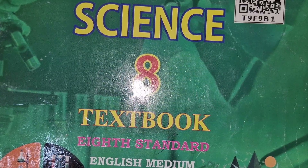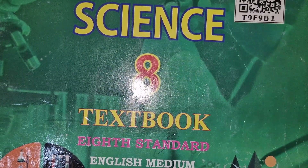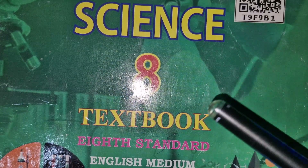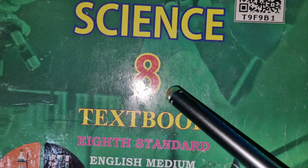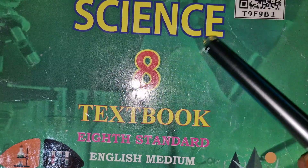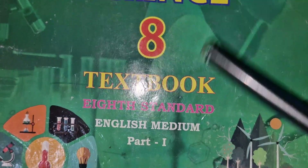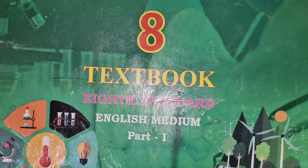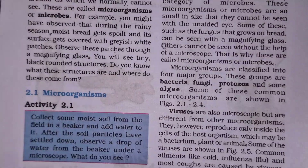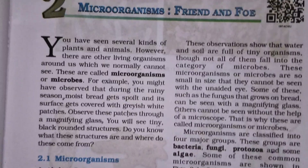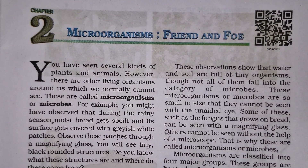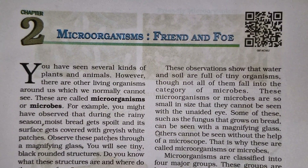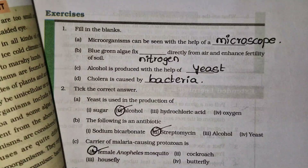Hello friends, once again welcome back to my channel. Today we are going to solve the question answers from the eighth standard science English medium, part one. The chapter name is the second chapter: Microorganisms — Friends and Foe.